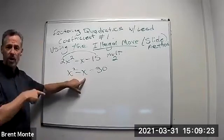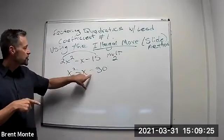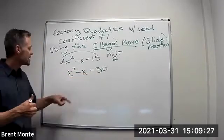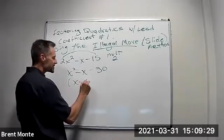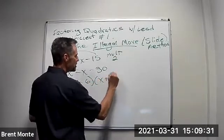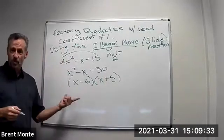But notice, this is something I know how to factor. The two numbers need to multiply to negative 30, add to negative 1. So we know it's x minus 6, x plus 5. And that factors correctly.